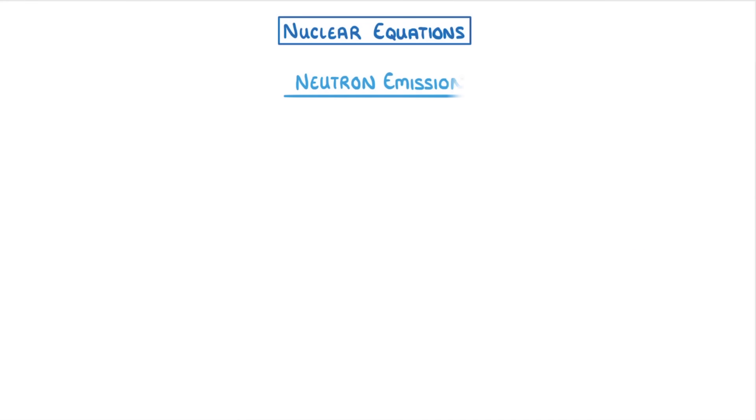The equations for neutron emission are also pretty easy. For example, beryllium-9 would decay into beryllium-8, plus a neutron. So all we've done is subtract 1 from the mass number, because it lost 1 neutron.